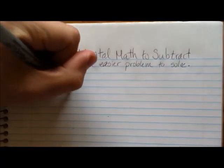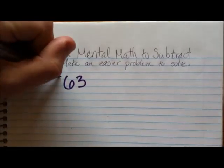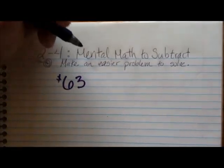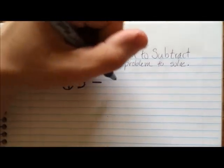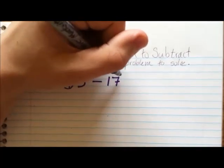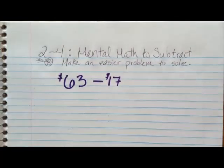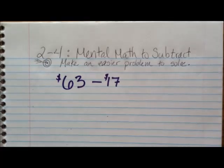Like any problem that you're going to solve in my class, I'd like you to write it down. Even though it's mental math, let's write it down here. So we have a shirt that cost $63 originally. And they're going to sell it to us by taking off $17. We want to know how much will we actually pay for this shirt.